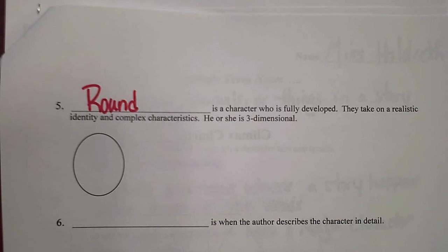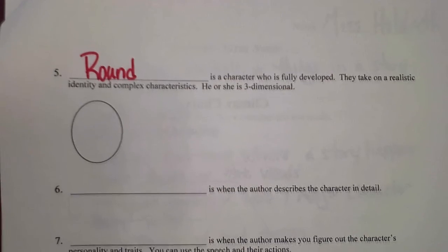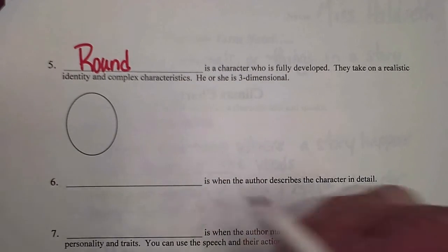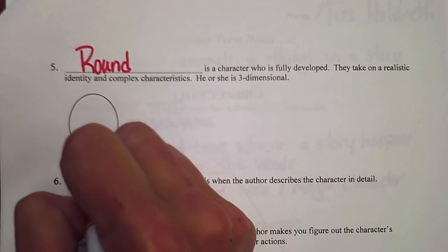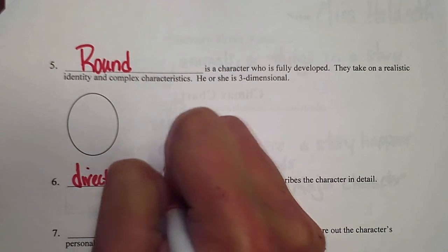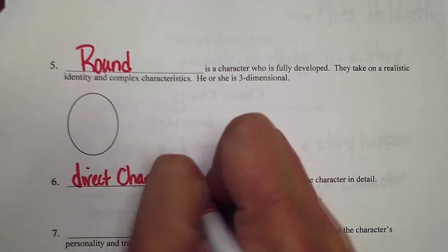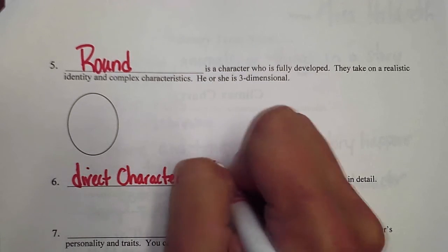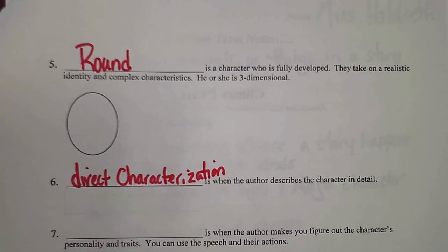Number six: direct characterization is when the author describes the character in detail. A really good example we're going to read this year is The Outsiders, because in chapter one S.E. Hinton describes the Greasers, who are one of the groups in the story, in detail. She talks about each greaser's personality, physical traits, and family relationships.